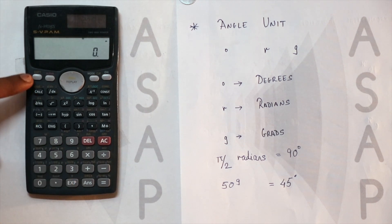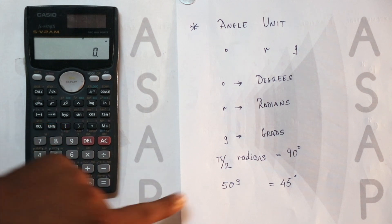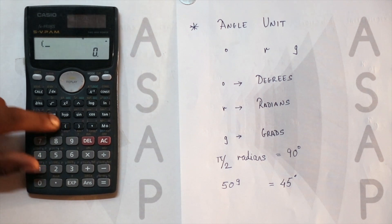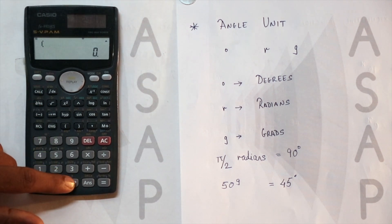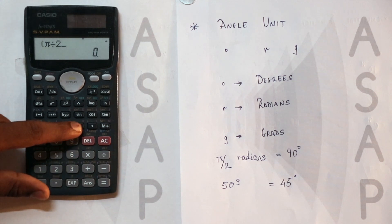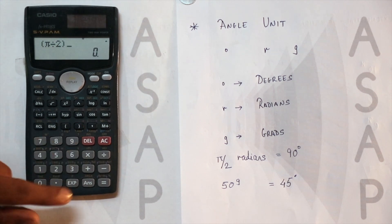Since it is divided by 2, I'm going to use brackets to solve this expression. So first bracket, then shift PI, divided by 2, and we close this bracket.